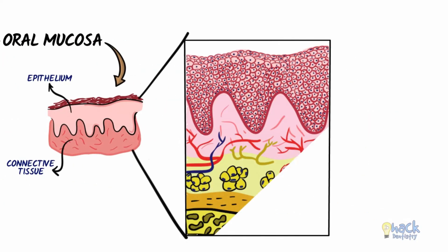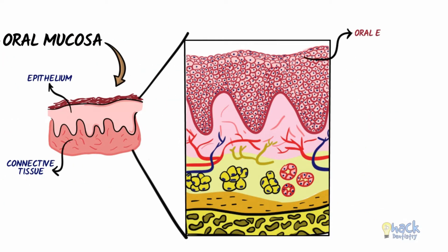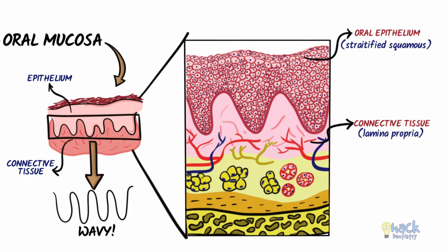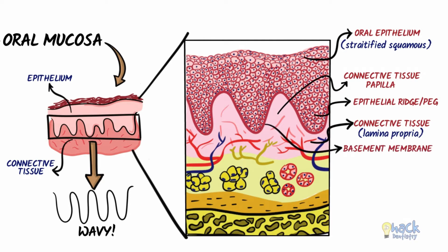The two main components of the oral mucosa are the stratified squamous epithelium, or the oral epithelium, and the underlying connective tissue called the lamina propria. The epithelium and connective tissue interface is wavy and undulating, with connective tissue papillae interdigitating with the epithelial ridges or pegs. The junction between the epithelium and the connective tissue is called the basement membrane and is referred to as the basal lamina ultrastructurally.